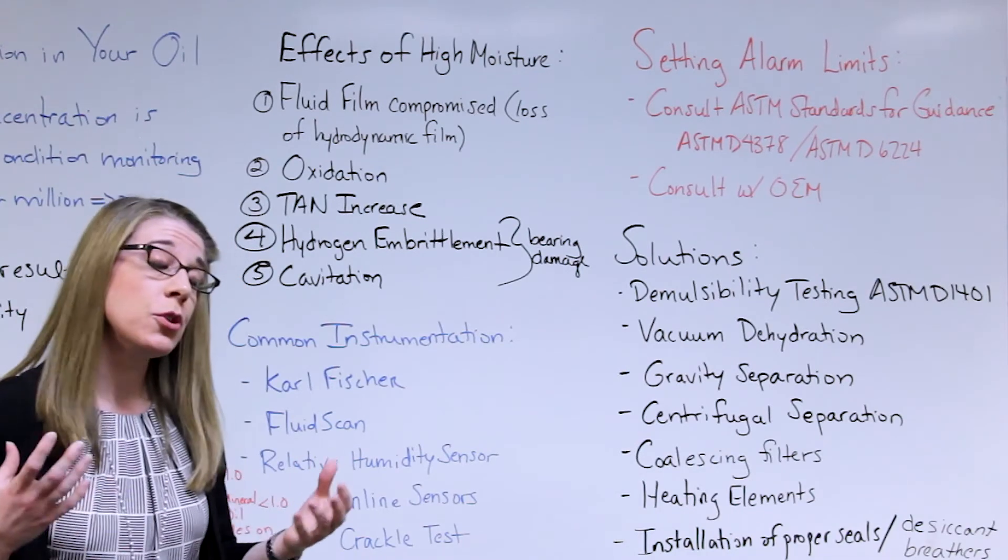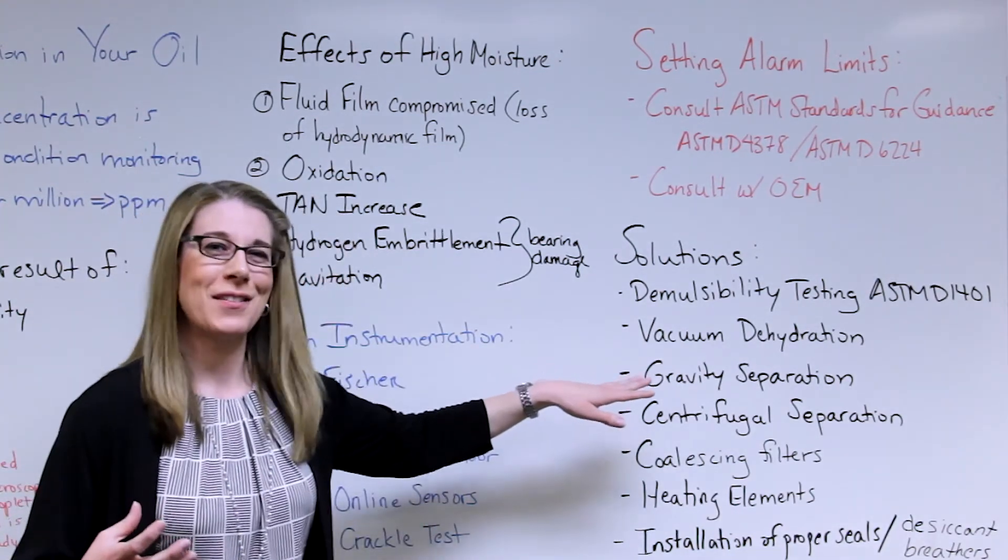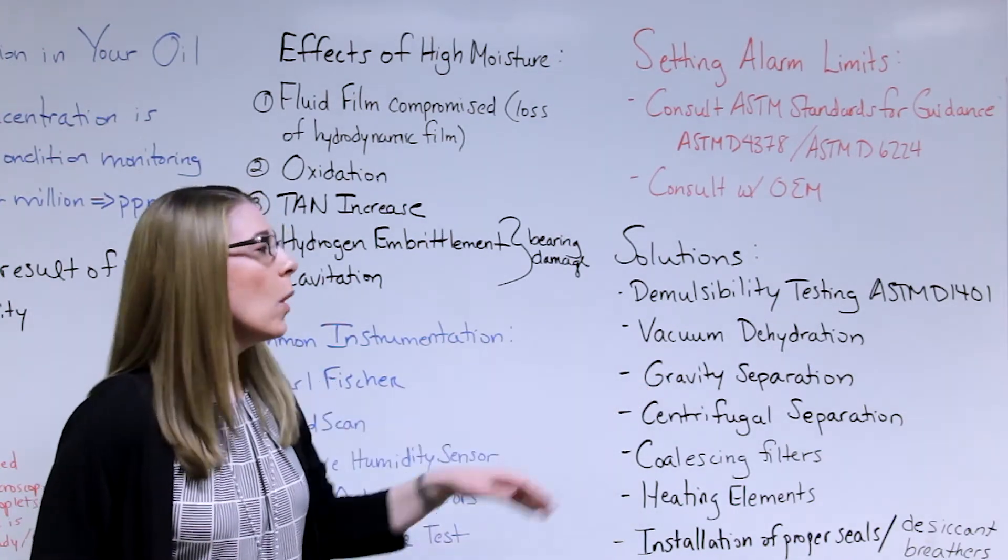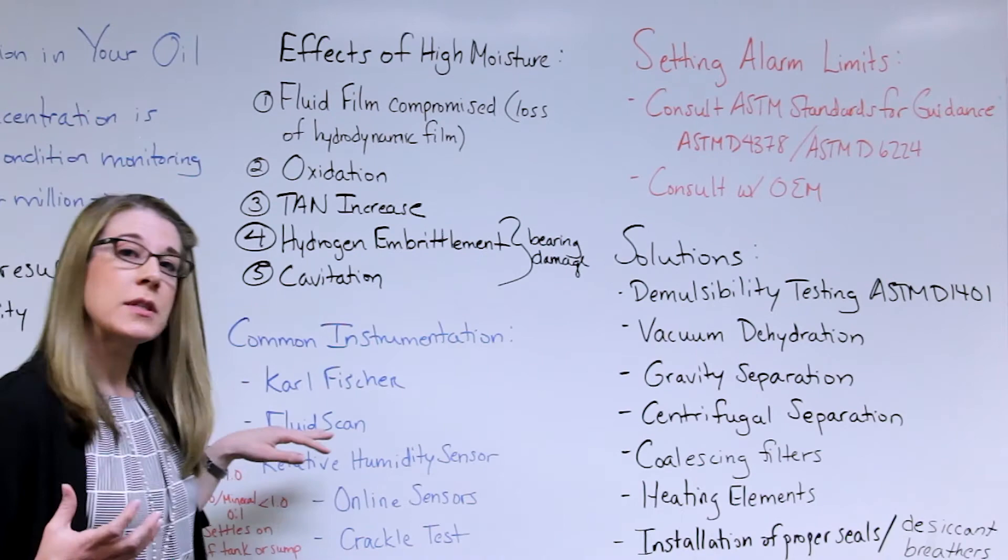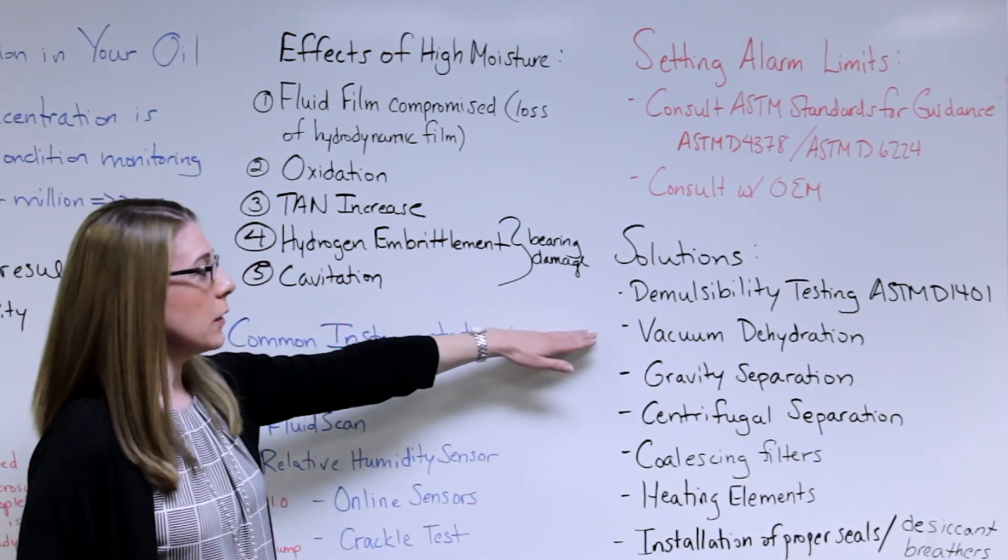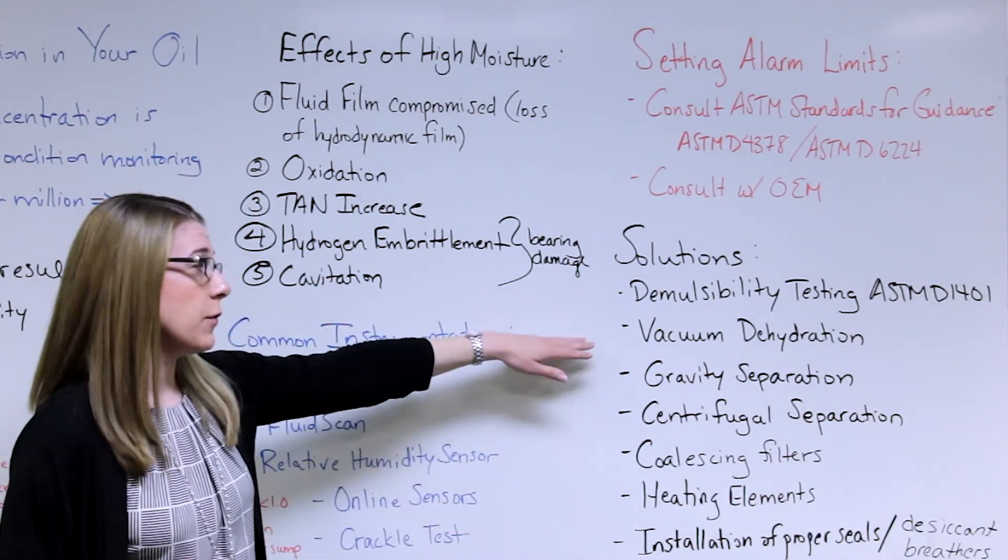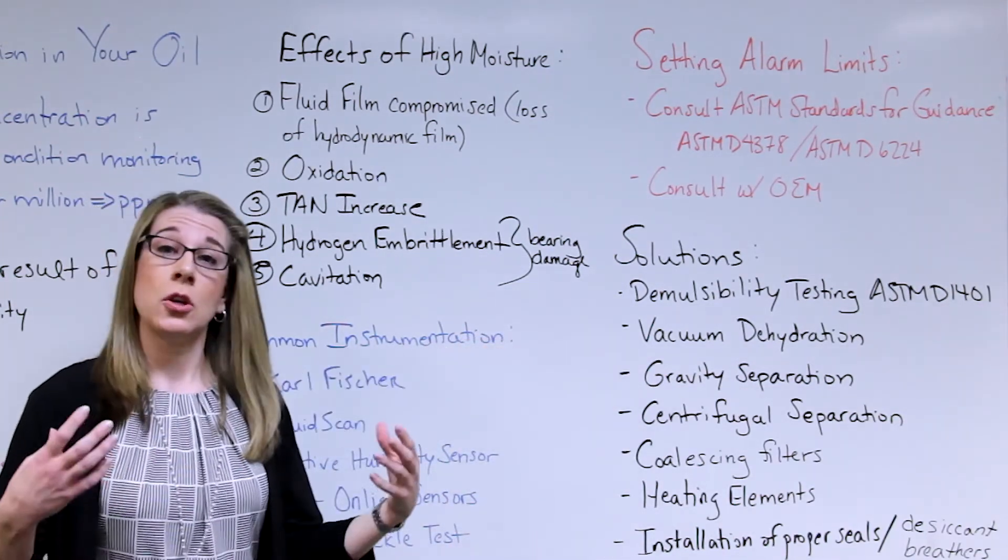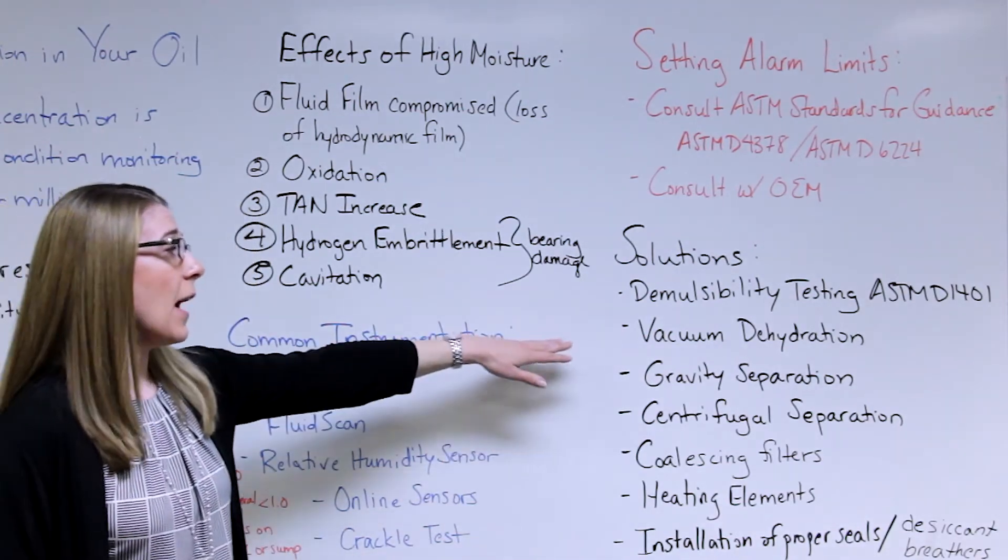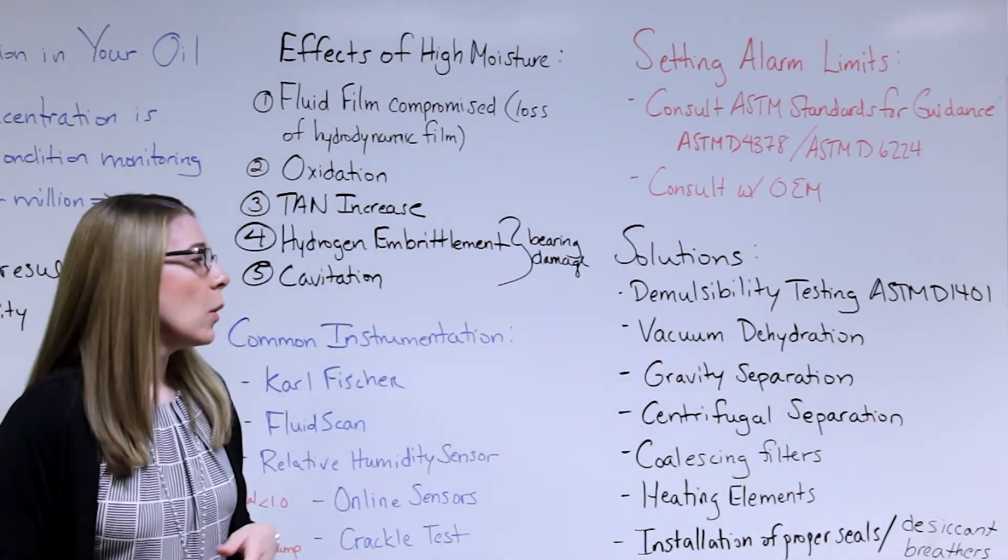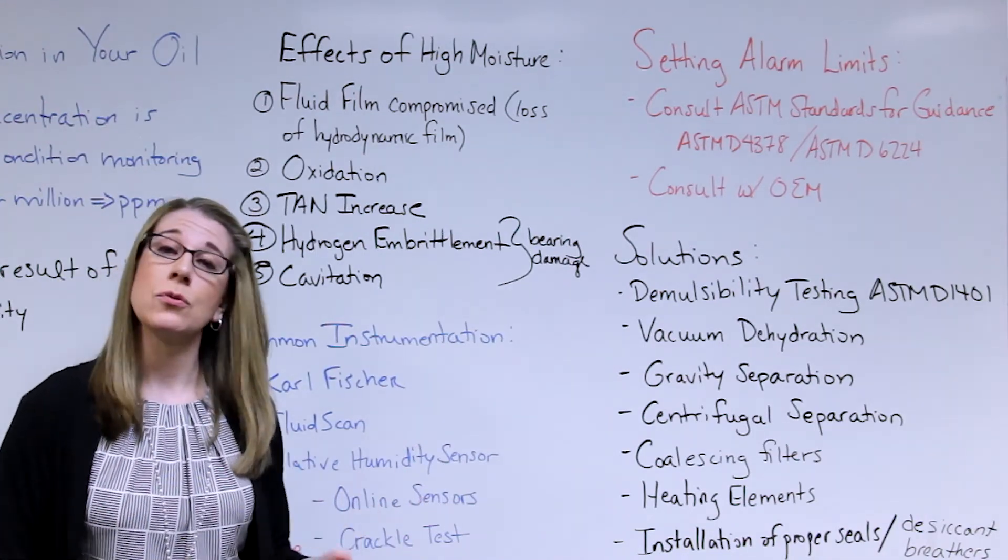When you're doing these techniques, once you choose a technique, it's important to understand what the effectiveness of the technique is. Utilizing the FluidScan would be a great on-site tool to monitor how these methods are being effective. If you're using a vacuum dehydration method, you could literally take a sample every hour to make sure that the water concentration is coming down. It's a good way to use it on site versus having to outsource it and wait for those results.